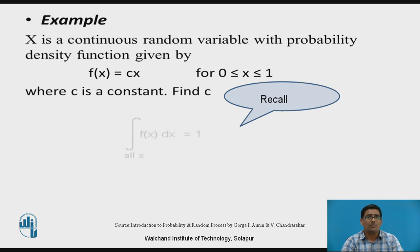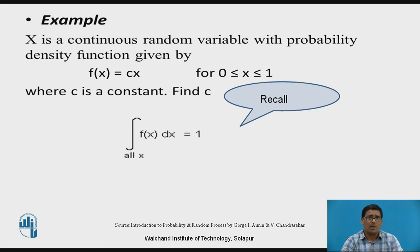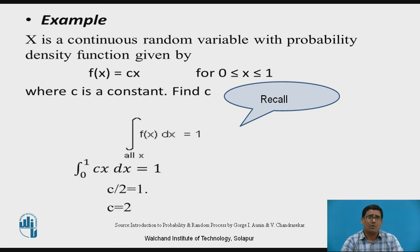Example: a continuous random variable X has probability density function f(x) = cx, for 0 < x ≤ 1, where c is a constant. Find c. Using the continuous distribution formula — integral from 0 to 1 of f(x) dx = 1 — we substitute f(x) = cx: integral from 0 to 1 of cx dx = 1. After integration, we get c/2 = 1, therefore c = 2.